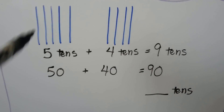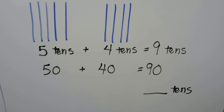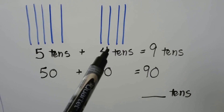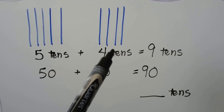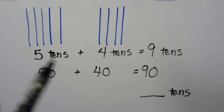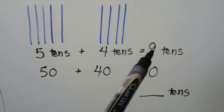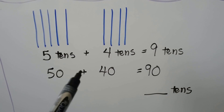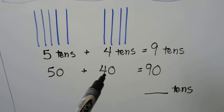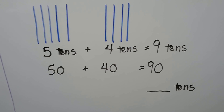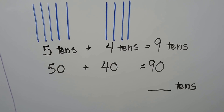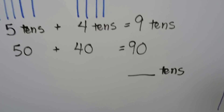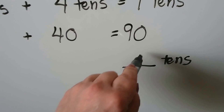Each long blue line is a ten. We have five tens plus four tens. Five plus four is nine. Fifty plus forty is equal to ninety. Ninety is nine tens.